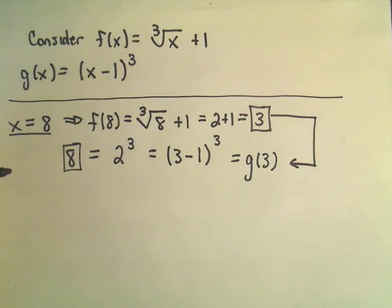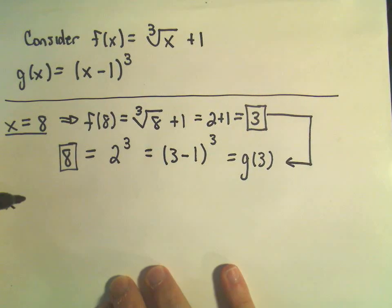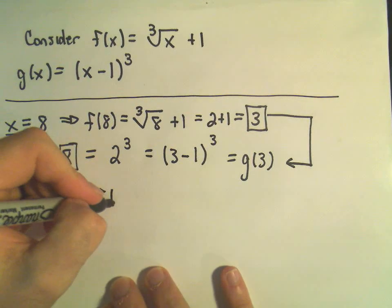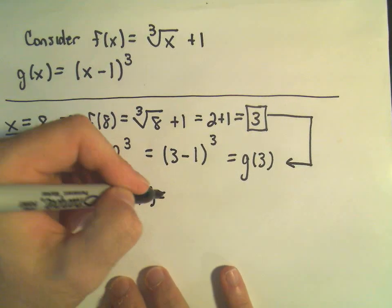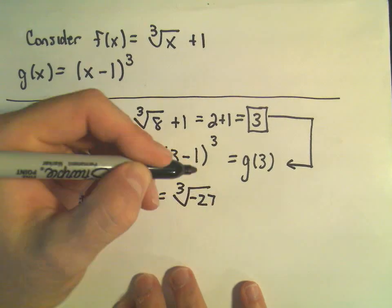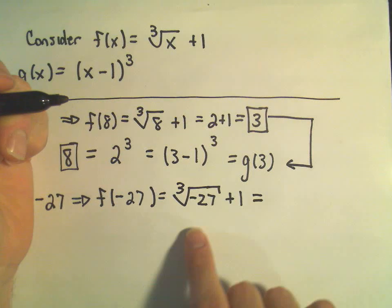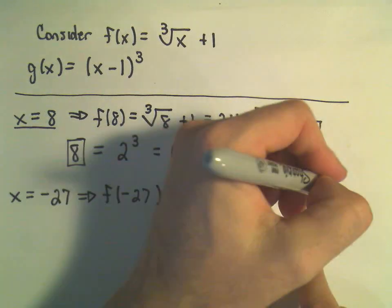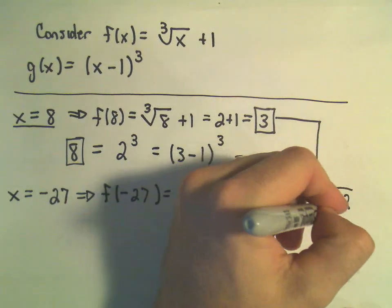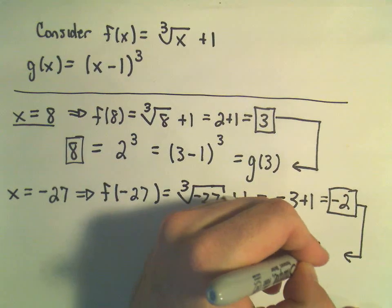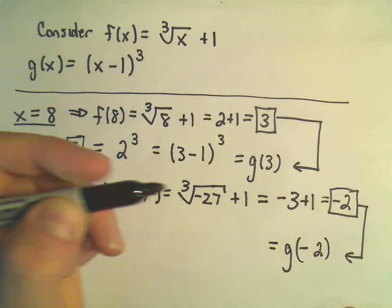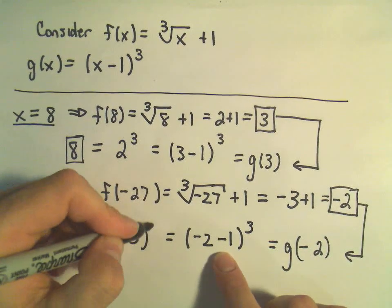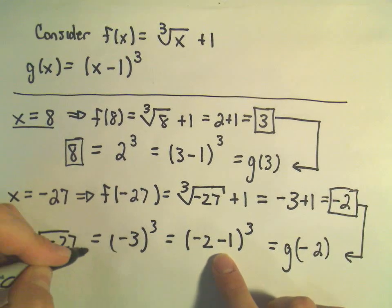Let's try one more value. What's another number we can take the cube root of? How about x equals negative 27. So if we start with f of negative 27, we'll get the cube root of negative 27 plus 1. The cube root of negative 27 is going to be negative 3. So we get negative 3 plus 1, which is going to be negative 2. Let's take this new number negative 2 and plug that into our g function. We'll get negative 2 minus 1 cubed, or negative 3 cubed, which is negative 27. We're back where we started.